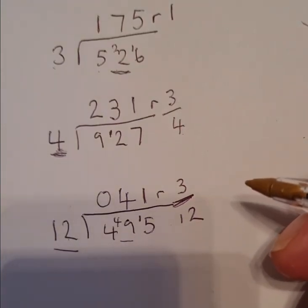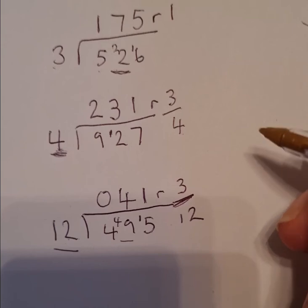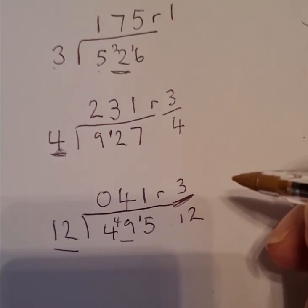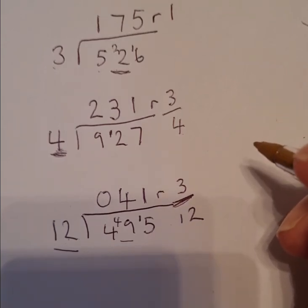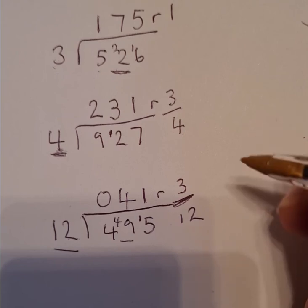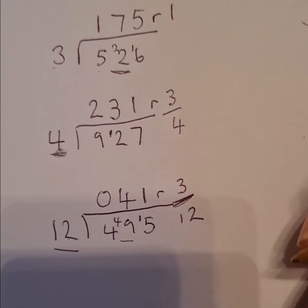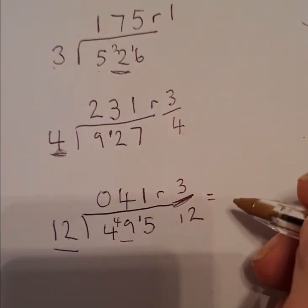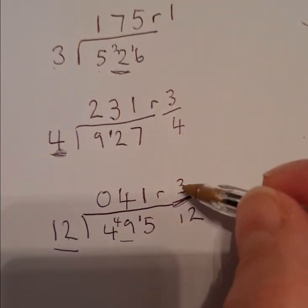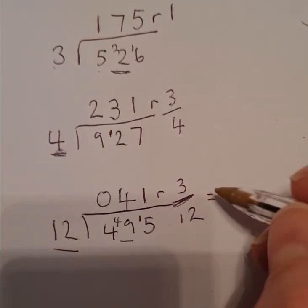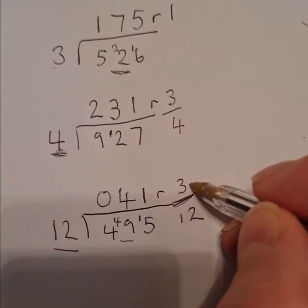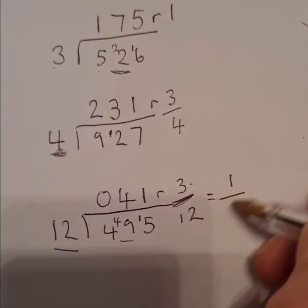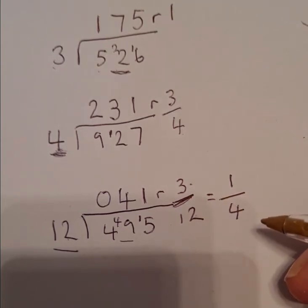Now some of these fractions can be simplified. And we've looked at this before. We need to look at the fraction and decide, can I divide the numerator and the denominator by the same number, thereby making the fraction a lot simpler. If I look at 3 over 12, they're both in the 3 times tables. I can divide them both by 3. I've got 1 3 in 3 and I've got 4 3s in 12. So it actually means a quarter. 41 remainder a quarter.